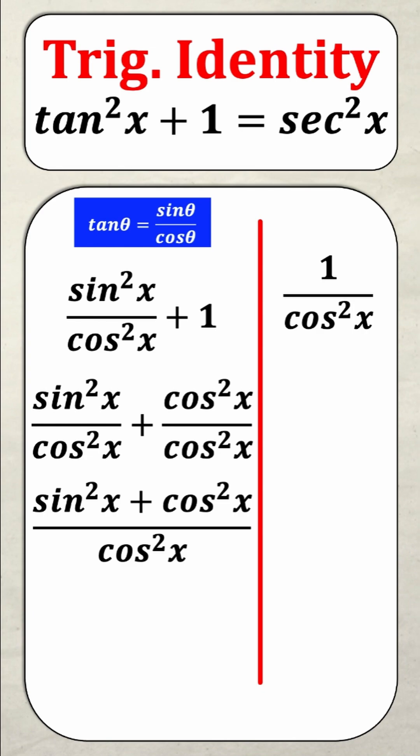Now believe it or not I'm almost solved and the reason is because of the Pythagorean identity. It says that sine squared theta plus cos squared theta is equal to one. And if you look you'll notice that sine squared x plus cos squared x is the numerator.